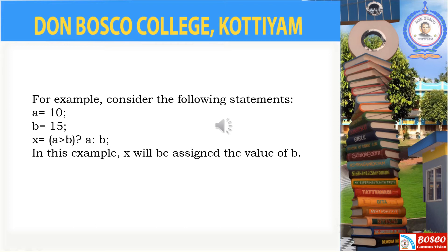This means the first expression, that is a greater than b, will be evaluated. If the evaluation is true, then the value of that expression will be a. If the first expression is false, then the value of that expression will be b. Here, a greater than b means 10 greater than 15, which is false. So it will take the value of b, which is 15. So 15 will be assigned to the variable x. This is the way a conditional operator works.